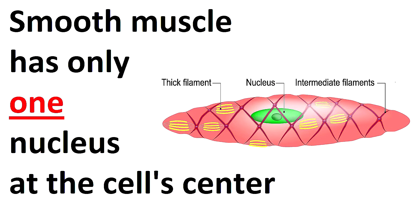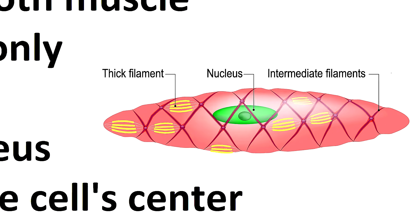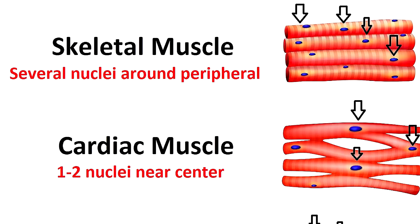One key difference with smooth muscle cells is that they only have one nucleus, which is located in the central portion of the cell. In contrast, skeletal muscle tissue has multiple nuclei around the peripheral portion, whereas cardiac muscle usually has one or two nuclei which are also centrally located.